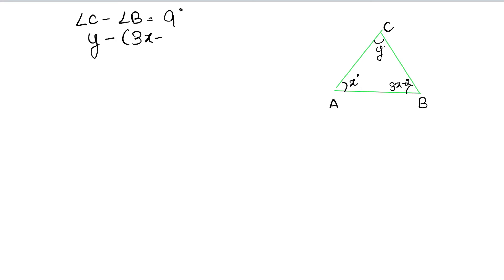Equals to 9 degrees, right? Now open the bracket: 3x, minus minus becomes plus, plus 2 equals to 9. Two goes to the other side, so it becomes minus 3x plus y equals to 9 minus 2, so minus 3x plus y equals to 7. This is our first equation.